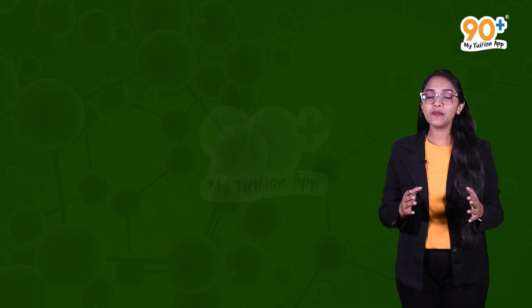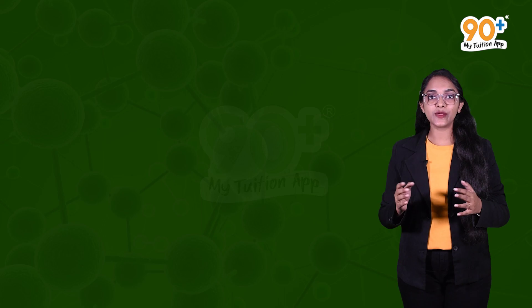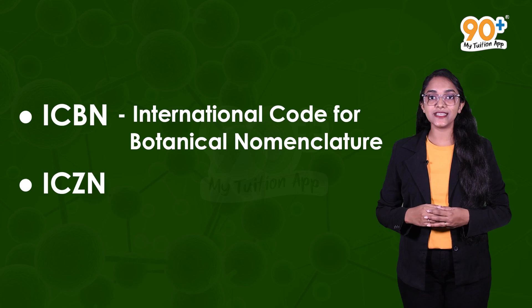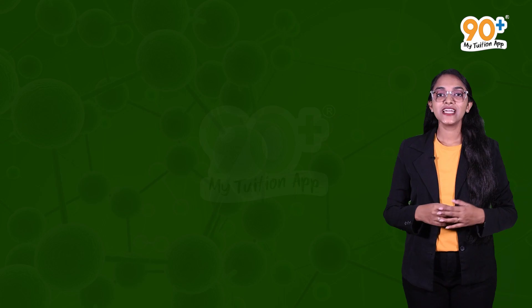Naming an organism is not an easy task, and not everyone can name a plant or animal. A group of scientists established procedures to name organisms, accessible to all biologists in the world. There are rules and regulations governed by ICBN — the International Code for Botanical Nomenclature for naming plants — and ICZN — the International Code for Zoological Nomenclature for naming animals. These also ensure the same name is not used for another organism.